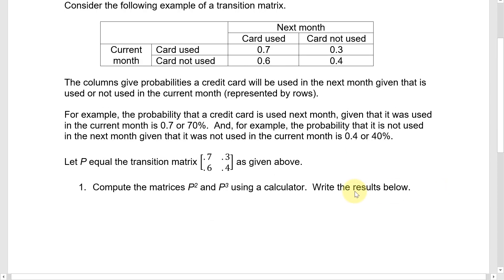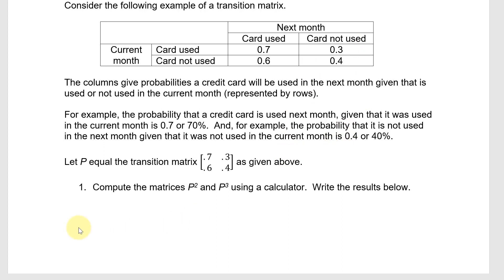Now let's look at the first question. Let P equal the transition matrix given in the table above. Let's compute the matrices P squared and P cubed using a calculator — that means P times P, and P times P times P. Of course you could do it by hand, but you can speed it up much faster on a calculator.